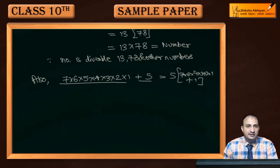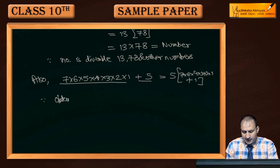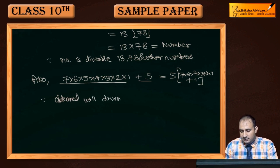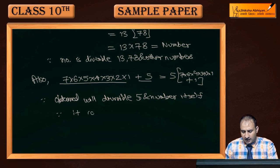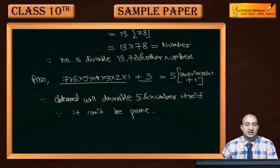यह number 5 से भी divide होगा और number itself से भी divide होगा। Since the obtained number will be divisible by 5 and the number itself, और दूसरे numbers से भी divide होगा, therefore it can't be prime। इसलिए यह composite number होगा।